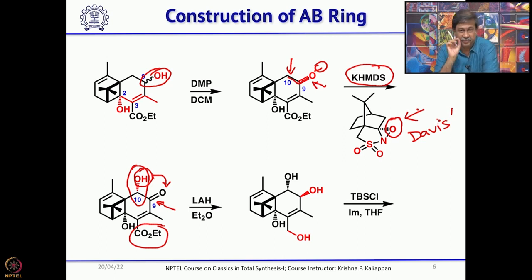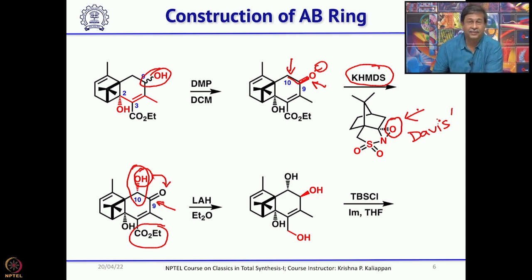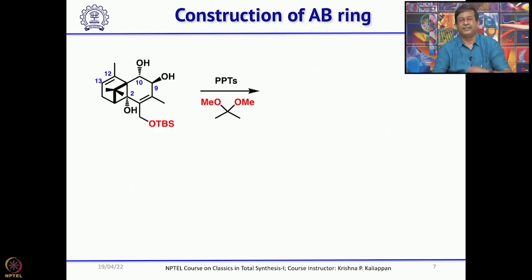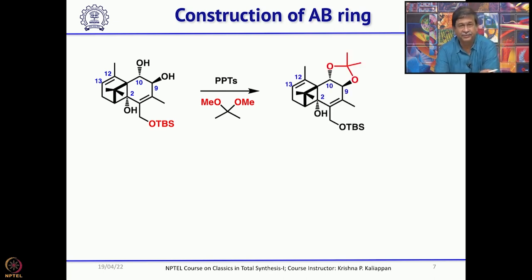Next, you have to protect the primary alcohol selectively, because you have two secondary alcohols, one tertiary alcohol, and a primary alcohol. It is easy to selectively protect the primary alcohol in the presence of secondary and tertiary alcohols using a bulky protecting group — TBS chloride, TBDPS chloride, or trityl chloride. Here they chose TBDPS chloride, so the primary alcohol was protected. Now the two secondary alcohols can be protected as an acetonide by treating with PPTS and dimethoxypropane — a very simple reaction at room temperature.